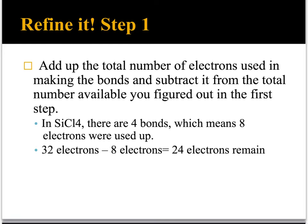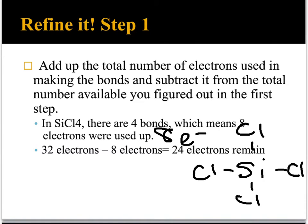The next thing you need to do is add up the total number of electrons used in making bonds and subtract it from the total number available we figured out in the first step. So, we have Si, Cl4, with four bonds, which means eight electrons were used up. Remember that we figured out earlier that the total number of valence electrons in this molecule is 32, and 32 minus 8 is 24. So 24 electrons remain.